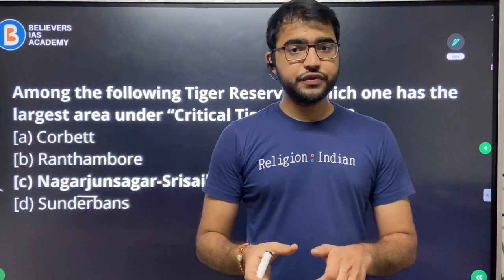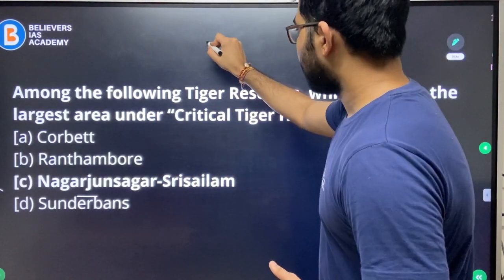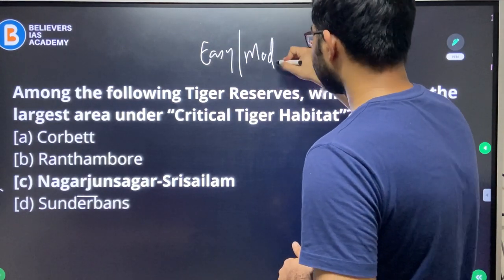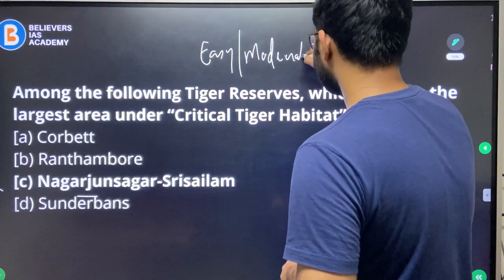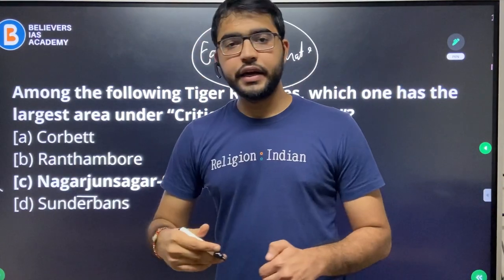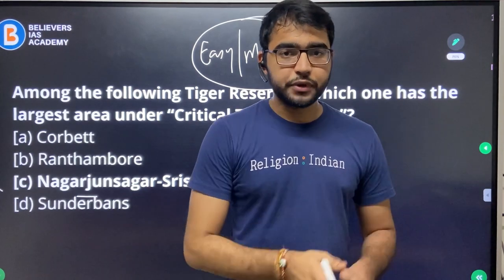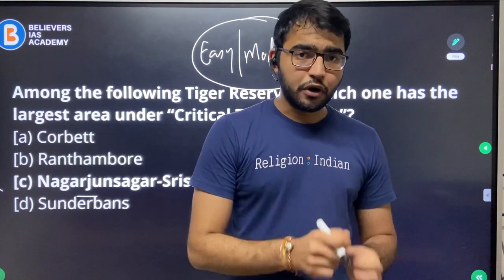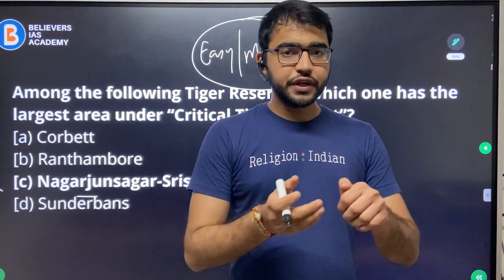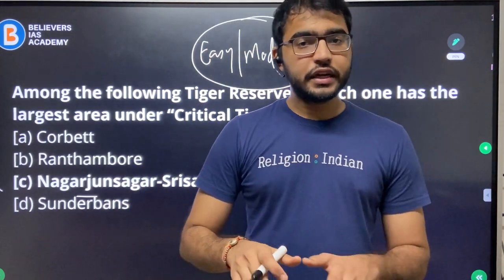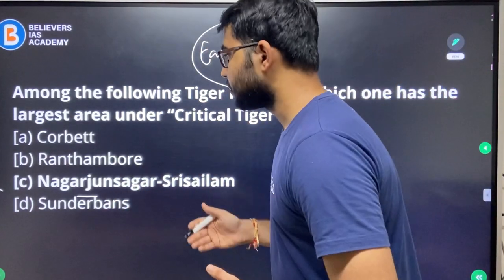So far we've gone through 8 to 9 questions. All the questions are either easy or in the moderate category. A few can be solved by applying the elimination technique, intelligent guessing, or the 'all of the above' principle. Topics covered include elephants, national parks, national biofuel policy — all things which were in news. UPSC is not asking questions out of nowhere; there is a reference point. They are asking questions from current affairs only.